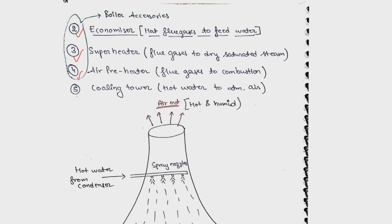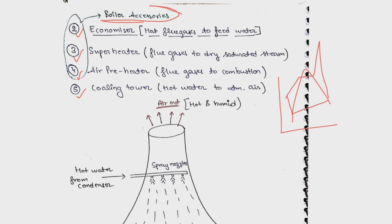Other examples of heat exchangers are economizer, superheater, air preheater, and cooling tower. Economizers, superheaters, and air preheaters are called boiler accessories — this is important. In a steam power plant running on the modified Rankine cycle, before the feed water reaches the boiler area, heat is supplied to it using an economizer, where hot flue gases flow.